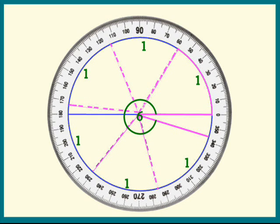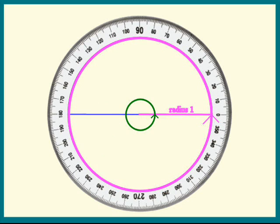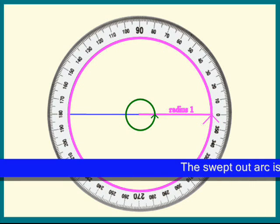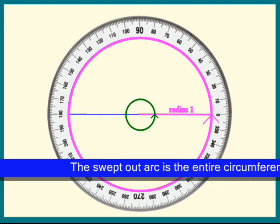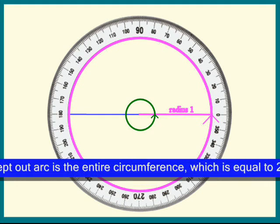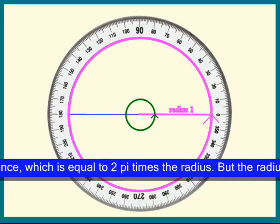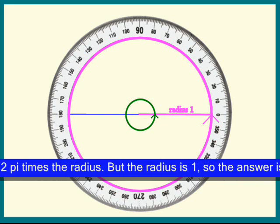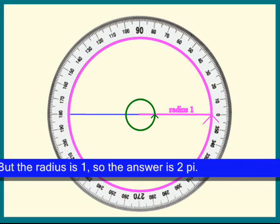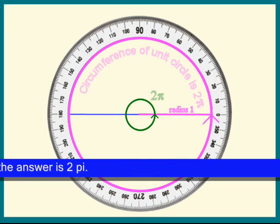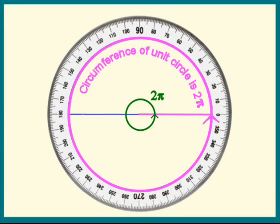Does anyone know what length makes one complete revolution? Yes, chipmunk? The swept out arc is the entire circumference, which is equal to 2 pi times the radius. But the radius is 1. So, the answer is 2 pi. Wow, you're incredible, chipmunk.